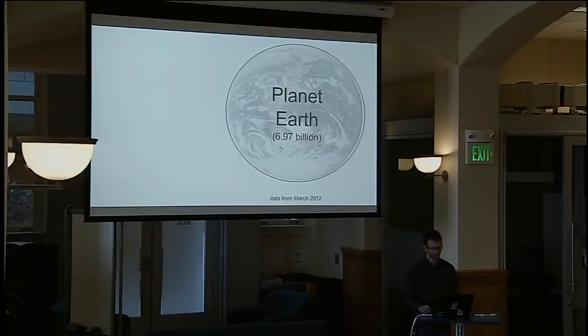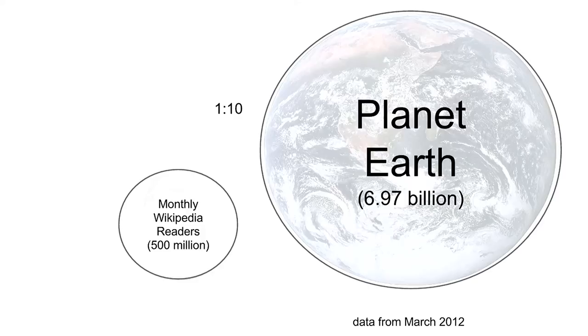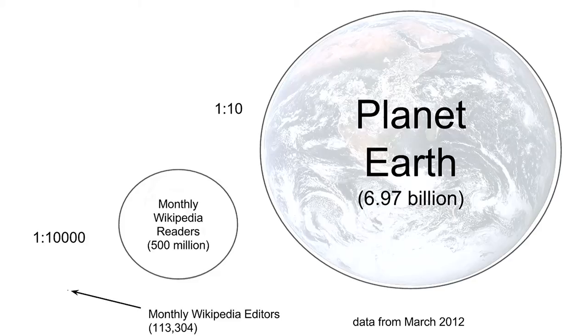I want to put us in a little bit of context. Planet Earth has about 7 billion people as of March 2012. Wikipedia has about 500 million readers on a monthly basis — about 1 in 10 of the planet. The editor population is a minuscule fraction: about 100,000 active editors, a 1 in 10,000 ratio.